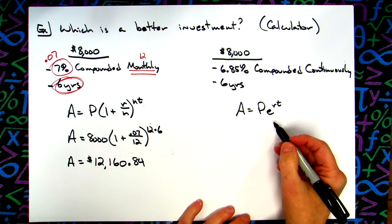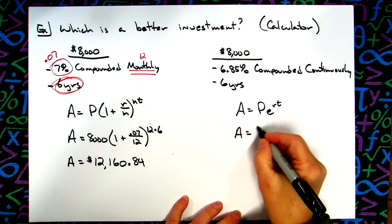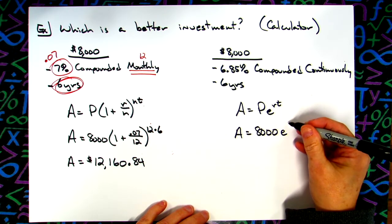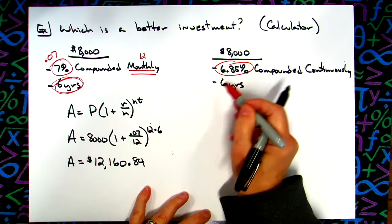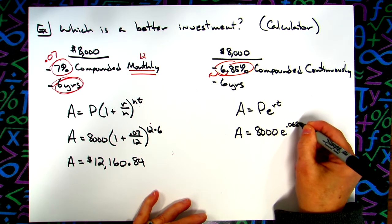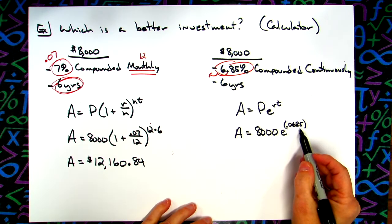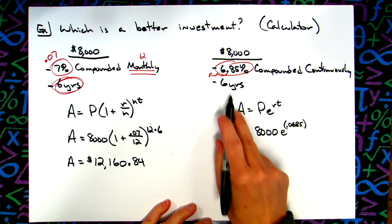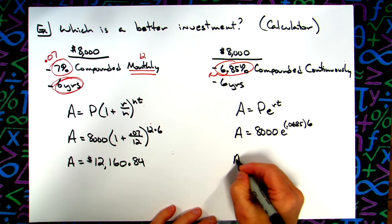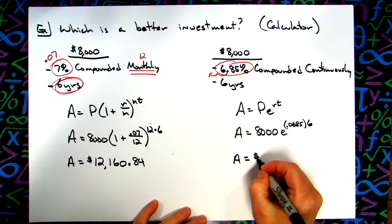Over here you're going to do the exact same thing and see if this number is bigger or smaller than what we got from the first one. I'm going to start with a principal of eight thousand dollars, put the E in, and raise that to the rate times the time. This rate moving that decimal two places to the left is going to give me 0.0685. Don't round that number, leave it that long, move it two places to the left. Then times six years. The answer to this one is going to be twelve thousand sixty-six dollars and sixty cents.